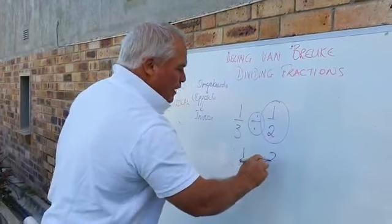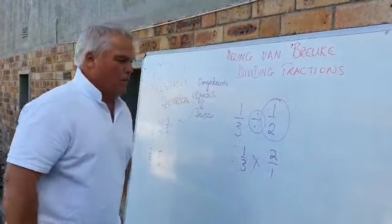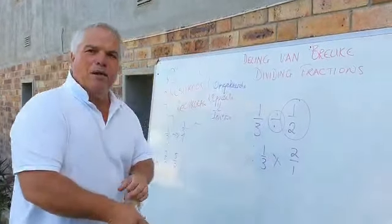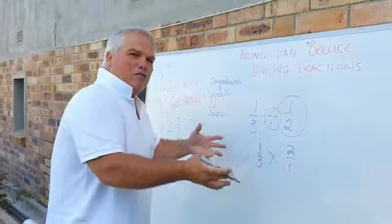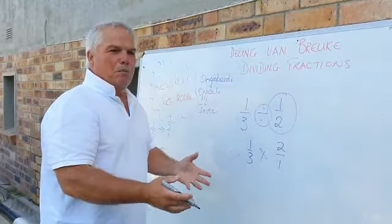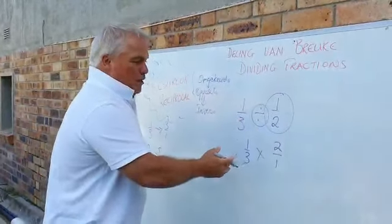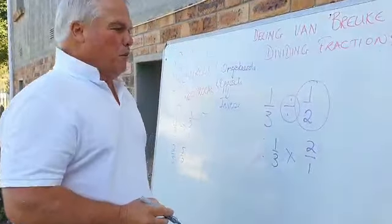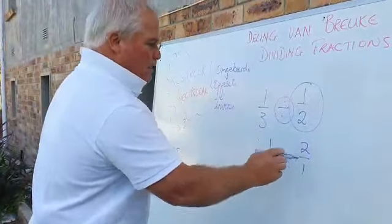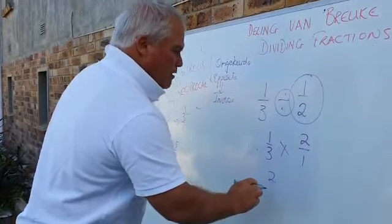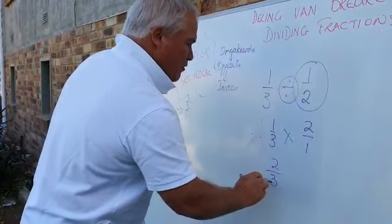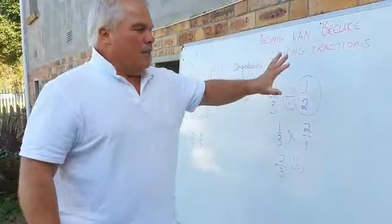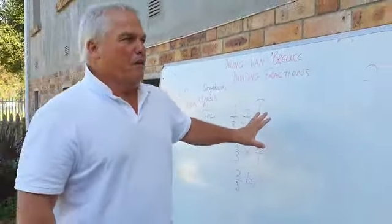So I reciprocate the half and write 2 over 1. Good, and what do you see now? We're back to multiplication. Back to what we already know - it's a simple cross-cancel if possible, and if you can't, in this case we multiply the numerators and the denominators. So 1 times 2 is 2, and 3 times 1 is 3. And there's your answer. Good - dividing common fractions is very simple.